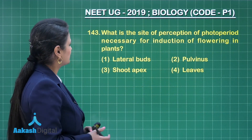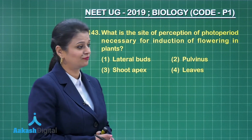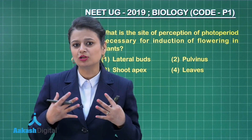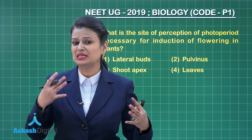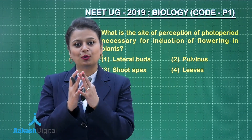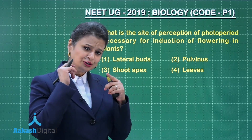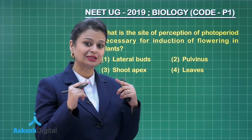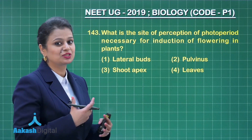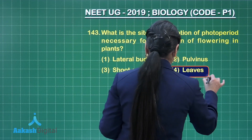Next question: what is the site of perception of photoperiod when necessary for induction of flowering in plants? Light period and dark period are responsible for flowering — an appropriate light and dark period is required. There is a pigment responsible for flowering called phytochrome, and this pigment is present in leaves. So the site of perception of the stimulus is the leaf. The right answer is option number four.